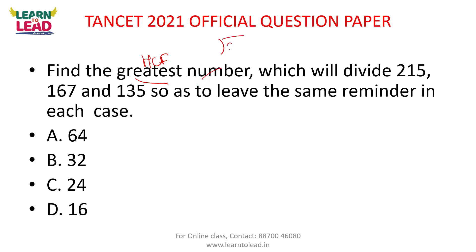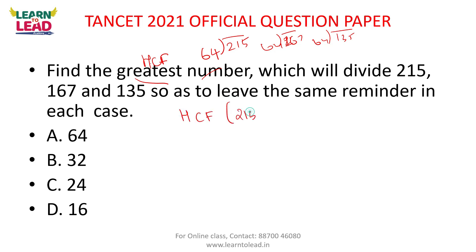215 divided — 215, 167, and 135 with same remainder in each case. What do you do? HCF of: first largest minus second largest (215 − 167), first largest minus third largest (215 − 135), and then 167 − 135.